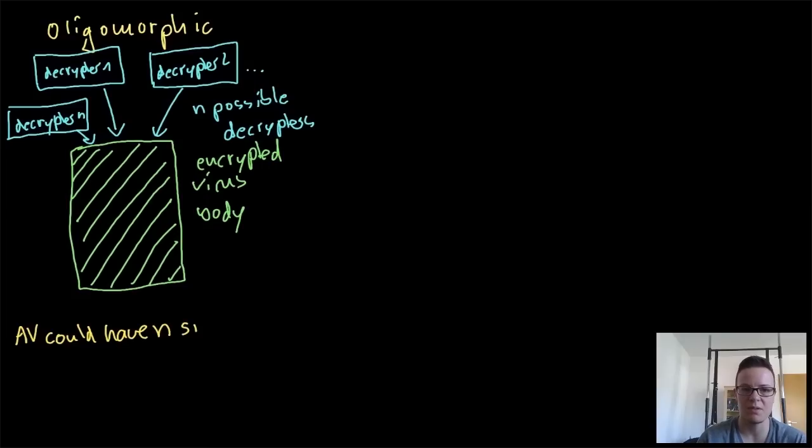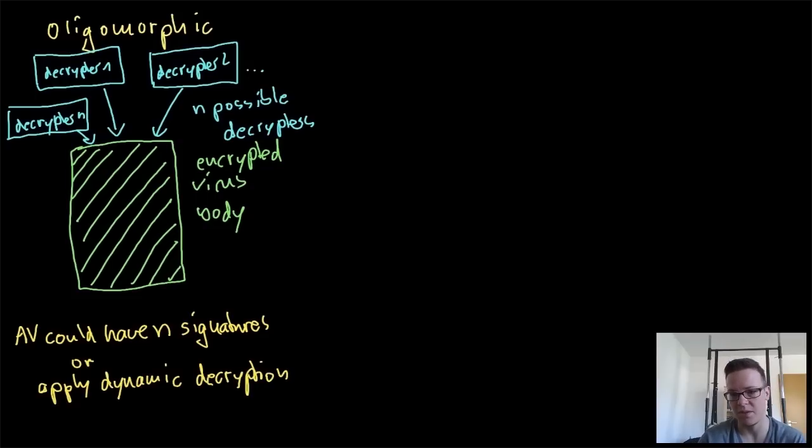Antiviruses could still use n signature patterns to detect all of them. It's tedious but it's possible, and some antiviruses started at this point to apply dynamic decryption, meaning they would, for instance, emulate the code to get the decrypted portion of the virus.